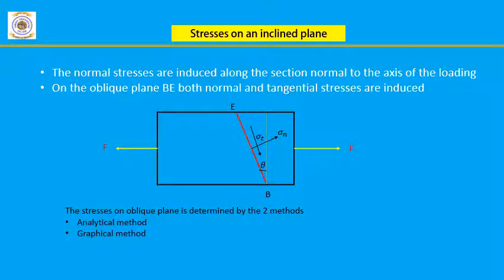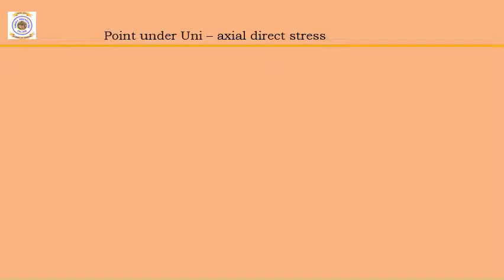There are three types of stress conditions we are going to consider for the element: the first is uniaxial direct stresses, the second is biaxial direct stresses, and the third is the general two-dimensional stress system. Now, let us begin with the first: element subjected to uniaxial direct stress system.